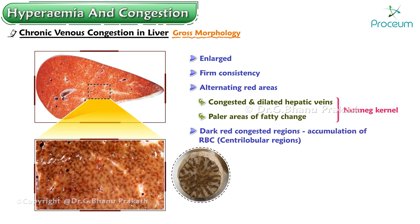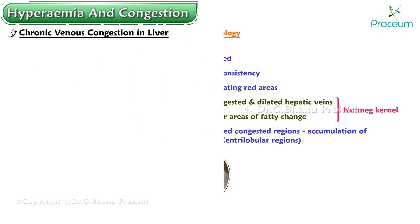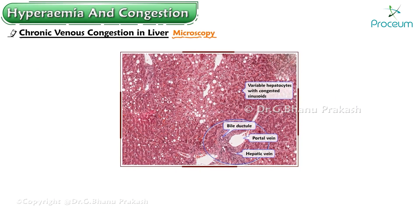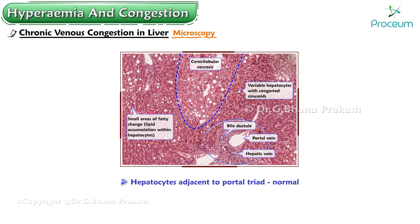Microscopically: dilated and congested hepatic venules with central lobular hemorrhagic necrosis of hepatocytes. The periphery shows fatty change in hepatocytes, while hepatocytes adjacent to the portal triad are normal. Later, fibrosis may develop and the condition is called cardiac cirrhosis.